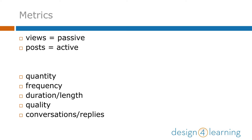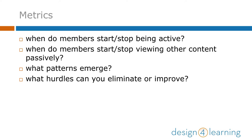I've shared some samples of these in the additional resources for this week to supplement what you already learned about rubrics in the Foundation Module. So once you've figured out the kinds of things you want to be counting, make sure you set up a system from the beginning to be able to track that interaction — or lack thereof. Look at when members start or stop being active, when they start or stop viewing other content passively, what patterns emerge, and what hurdles you can eliminate or improve.